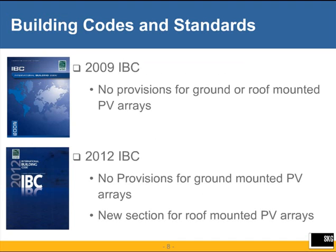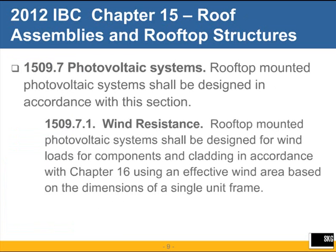Starting with the building code, which is really where everything starts in the design process: in the 2009 IBC and previous editions, there were no provisions specifically for either ground-mounted or roof-mounted arrays. However, in the 2012 IBC, while there still aren't any provisions for ground-mounted arrays, there is a new section for roof-mounted PV arrays. That section is in Chapter 15 — section 1509.7 covers photovoltaic systems that are roof mounted. We will focus on the wind resistance, which is the topic of our discussion today.